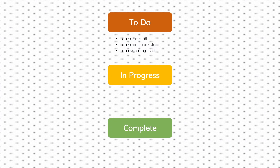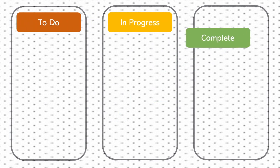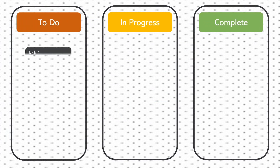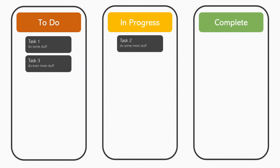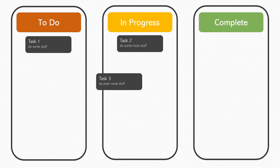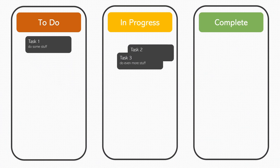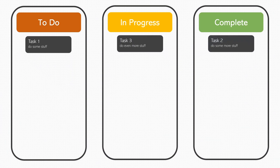in-progress or complete. Now that tasks can have multiple states, we need a better way to lay them out. So instead of a list, we make each task into a card, and then lay them out in columns depending on their state. Then when a card changes state, we can simply move it from one column to the next. And that's it — this is the essence of Kanban.